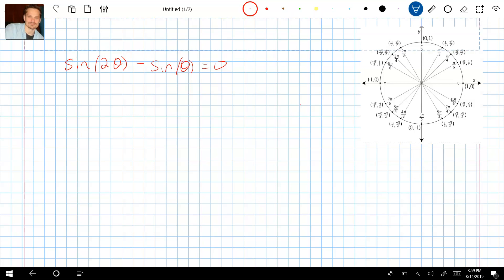So what we can do is step 2: we write sin(2θ) as 2sin(θ)cos(θ). This is a well-known identity that represents sin(2θ). So 2sin(θ)cos(θ) - sin(θ) = 0 still.